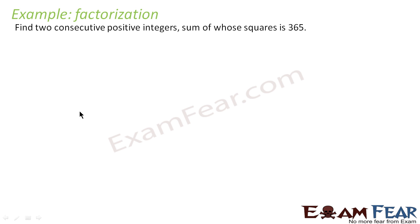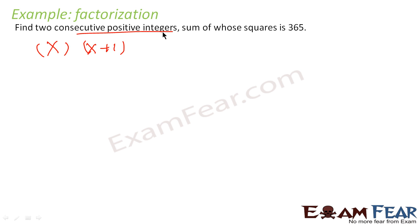We will take one more example of factorization. You have to find two consecutive positive integers whose sum of squares is 365. I can take x and x plus 1 as the two consecutive positive integers. The question says sum of whose squares is 365, meaning I first square the numbers and then find the sum: x squared plus (x plus 1) squared equals 365.